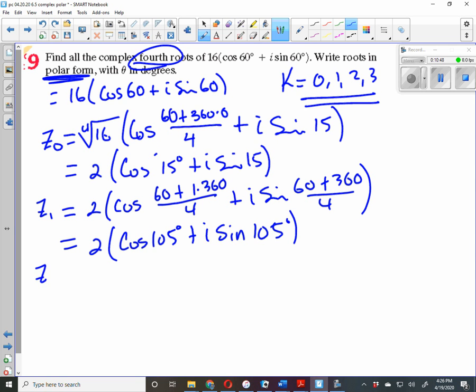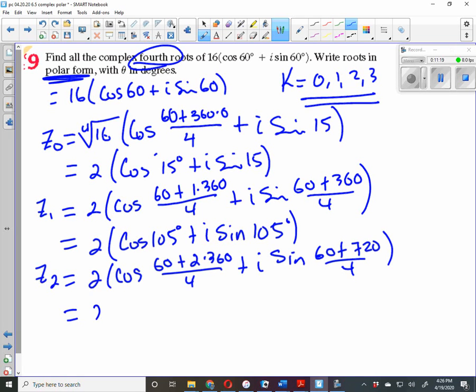z₂ is 2 cosine (60 + 2×360) divided by 4, plus i sine (60 + 2×360 = 720) divided by 4. If we have to, we're going to use a calculator. 780 divided by 4 is 195, so this equals 2 cosine 195° plus i sine 195°.